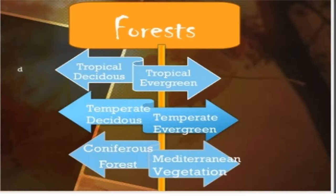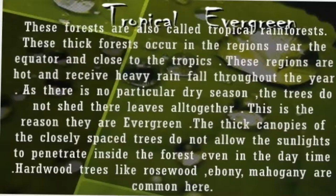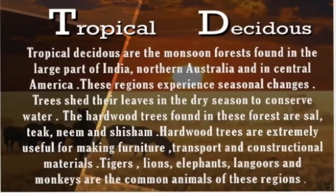Let us take the detailed information about the tropical evergreen forest. Tropical evergreen forests are also called tropical rain forests. Evergreen means this forest will never face any dry season — they remain green throughout the year and require heavy rainfall. The specialty of this forest is the thick forest cover, and that's why there is no particular dry season. The trees do not shed their leaves altogether, and that is the reason it is called evergreen. The examples are rosewood, ebony, and mahogany, which are common examples of tropical evergreen forest.